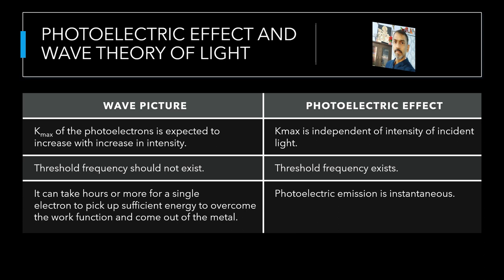Further, we should note that in the wave picture, the absorption of energy by electron takes place continuously over the entire wave front of the radiation. Since a large number of electrons absorb energy, the energy absorbed per electron per unit time turns out to be small. Explicit calculations estimate that it can take hours or more for a single electron to pick up sufficient energy to overcome the work function and come out of the metal. This conclusion is again in striking contrast to observation, that the photoelectric emission is instantaneous. In short, the wave picture is unable to explain the most basic features of photoelectric emission.